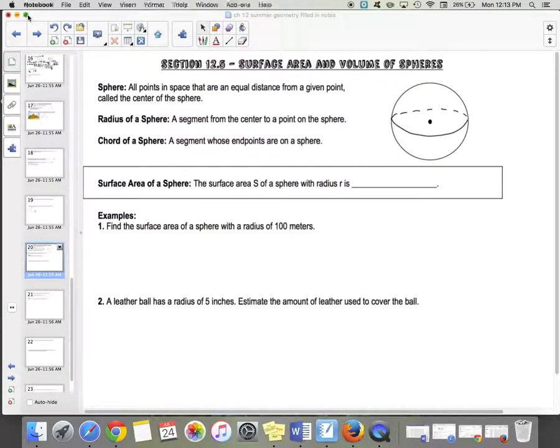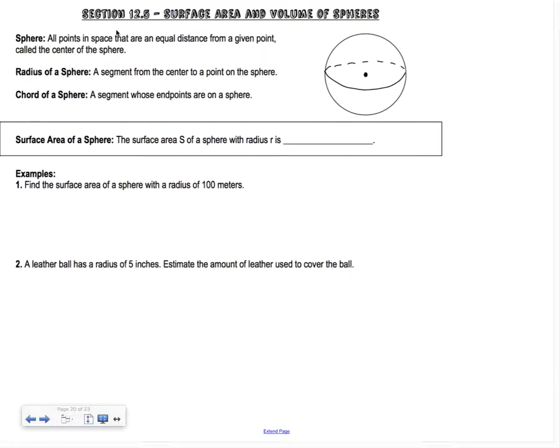Section 12.5 is on surface area and volume of the sphere. This is the very last section in geometry. A sphere is all points in space that are equal distance from a given point called the center. Every single point that's the same distance forms this sphere shape that goes around.